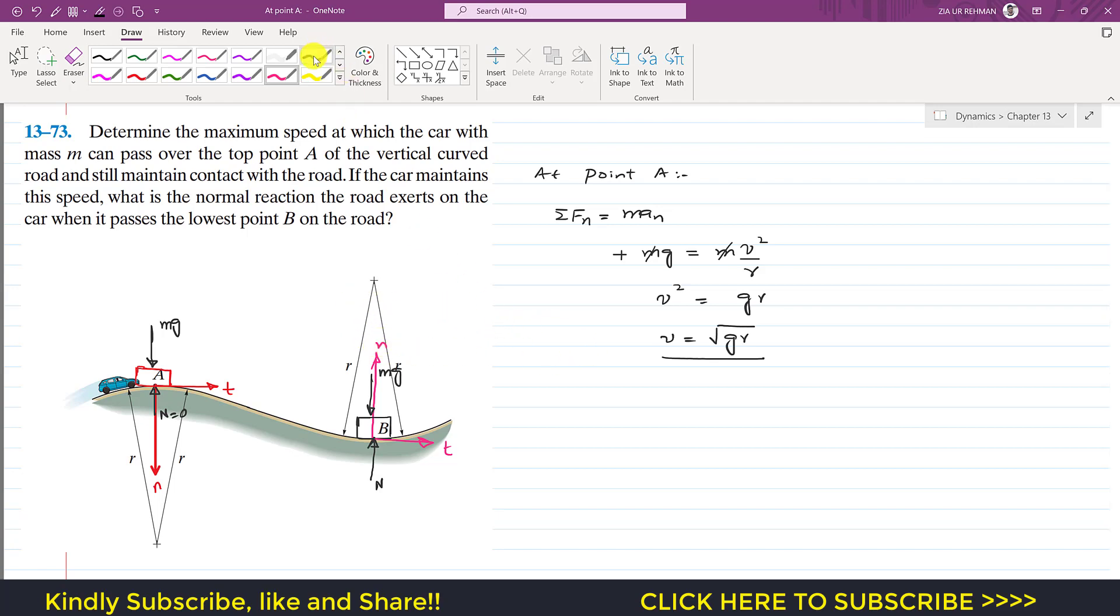So again, if we apply at point B, if we apply the summation of forces along the normal axis is equal to m a_n, so now as we can see that mg is acting in the negative n direction, so I will write minus mg plus N, and this is equal to m a_n, and a_n is v squared divided by r.